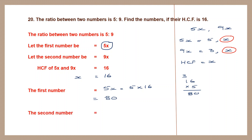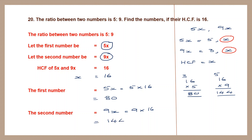The second number is 9x, that is 9 into 16. Multiplying: 9 sixes are 54, carry 5; 9 ones are 9 plus 5 is 14. So the second number is 144. First number is 80 and second number is 144.